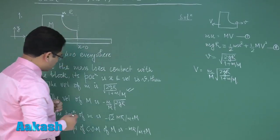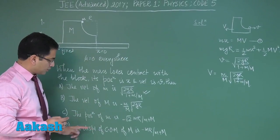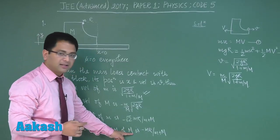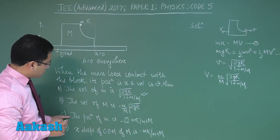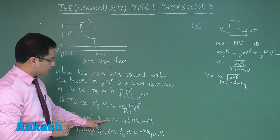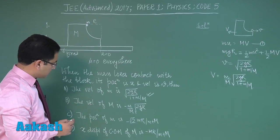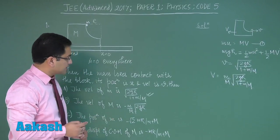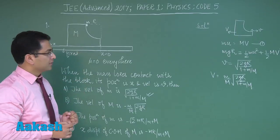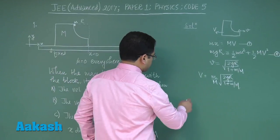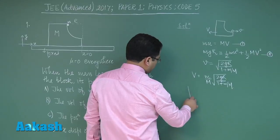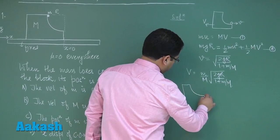Now let's try to discuss the position part and the x displacement of center of mass of capital M. Have a look. Option C is demanding position of small m and option D is demanding the x displacement of center of mass of capital M.